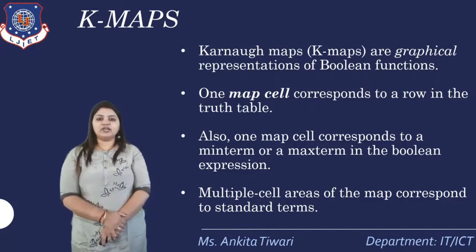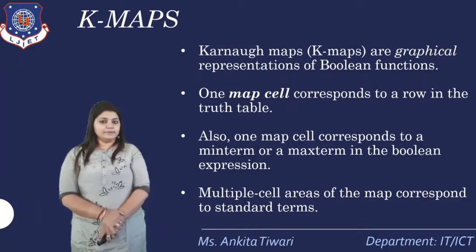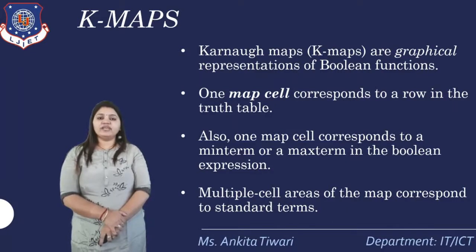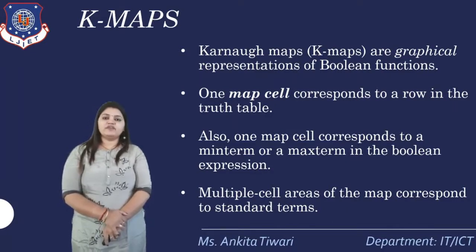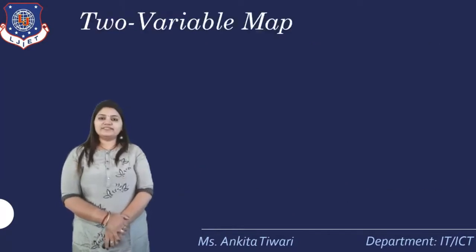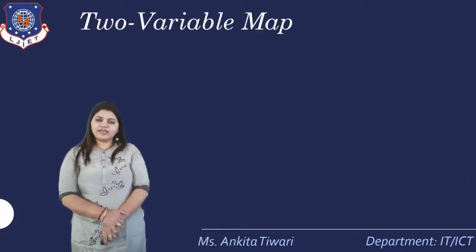The multiple areas include rows and columns. A cell corresponds to a row in the truth table. With respect to the truth table, the values of the variables are put into the K-Map and reduced. We will now start with different types of K-Maps.